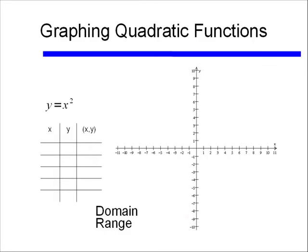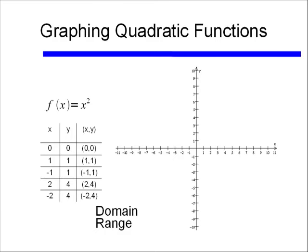Let's graph a quadratic function. We'll say f of x equals x squared. Our input is x and our output f of x is y. If x is 0, y is 0; if x is 1 or negative 1 the output is 1; and if x is 2 or negative 2 the output is 4. Those points connected together give me a quadratic function — it's a parabola.